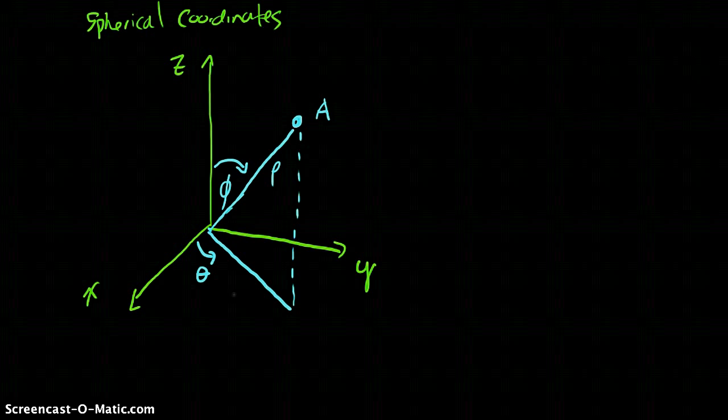And it's going to be the same one that we used. Theta is the same as the one that we used in polar coordinates. It's the angle away from the positive x-axis.